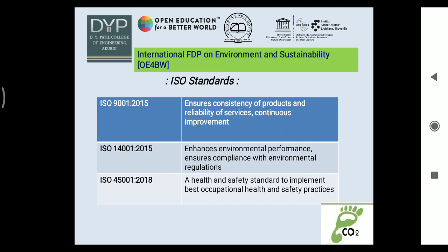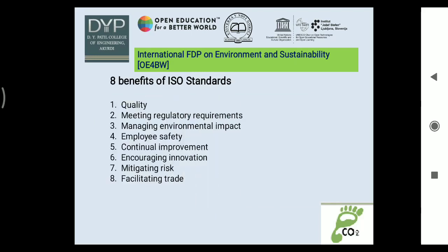In last week, we saw some ISO standards like ISO 9001-2015, ISO 14001-2015, and ISO 45001-2018. These ISO standards mean a lot for sustainable development, with the following 8 benefits.